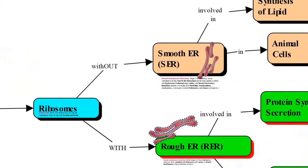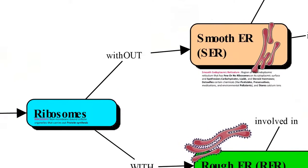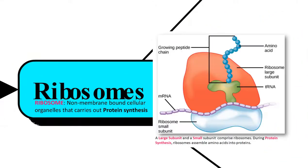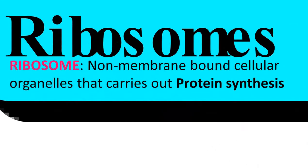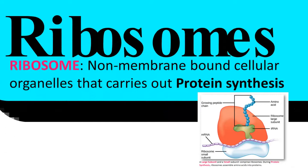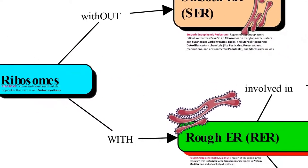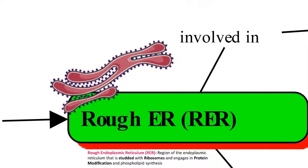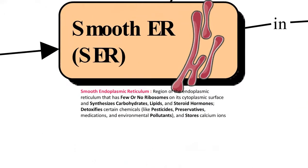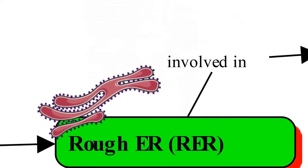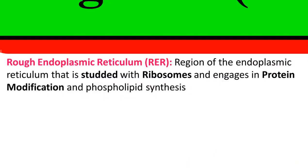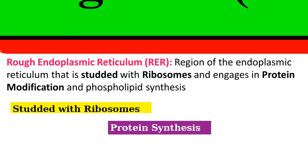The endoplasmic reticulum is classified into rough endoplasmic reticulum and smooth endoplasmic reticulum based on the presence or absence of ribosomes. Ribosomes are non-membrane-bound cellular organelles involved in protein synthesis. If ribosomes are present on the surface of the ER, that region is called the rough endoplasmic reticulum. The rough ER is the region studded with ribosomes and engaged in protein synthesis, protein modification, and phospholipid synthesis.